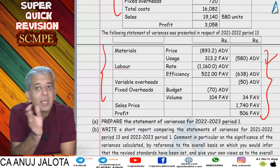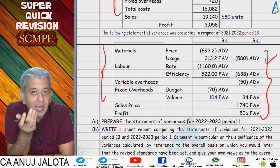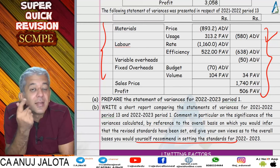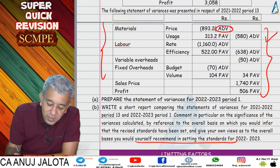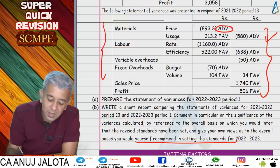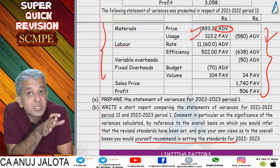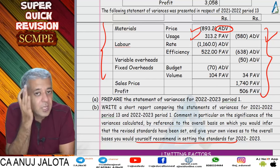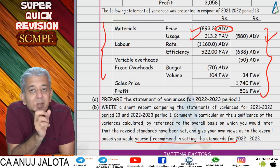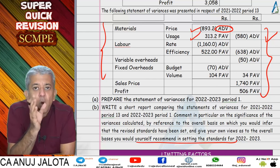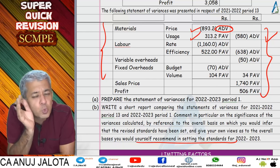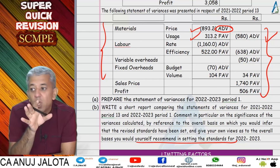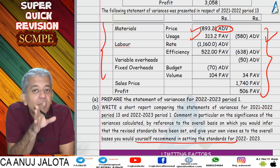The question asked us to comment on the variances — especially on how the company revises its standards each year. We realized: every adverse variance in the last year became favorable in the current year, and vice versa. Although actual performance was the same, variances changed because standards changed. The company seems to blame the standards for adverse variances and then make them looser. If a variance is adverse, they assume standards are too tough and loosen them next year so variances become favorable. If favorable, they tighten standards next year so variances become adverse. This means the company is doing standard evaluation rather than performance evaluation — which is wrong.